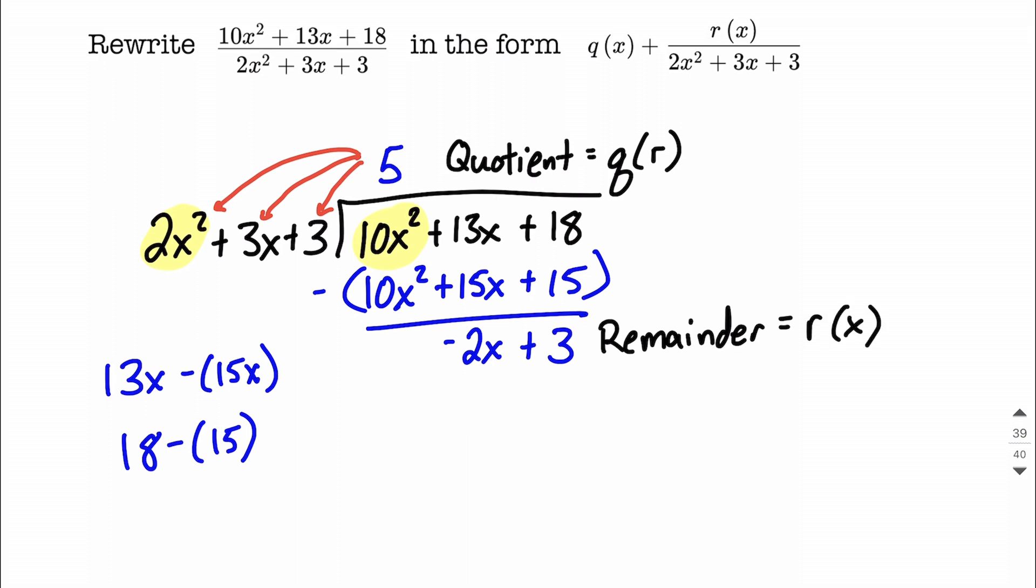So we can always rewrite our long division there as the quotient, plus the remainder, negative 2x plus 3, over the divisor. The 2x squared plus 3x plus 3.